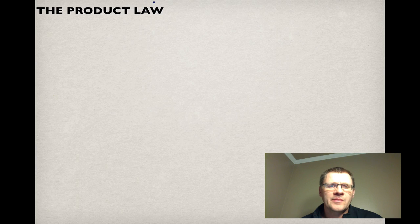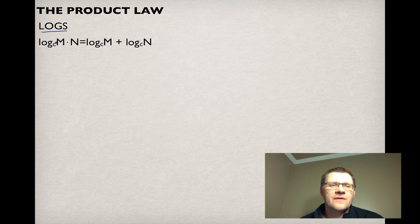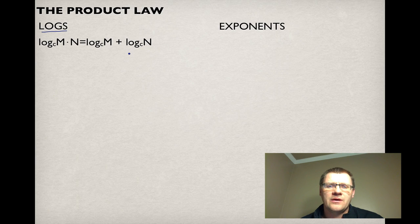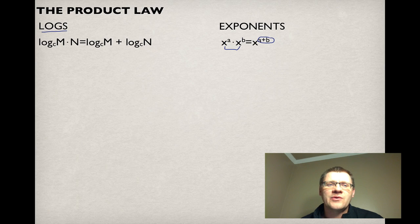Our first law is called the product law. In log terminology, if you have log base c of two numbers m times n, you can change this into an adding question: log_c(m) + log_c(n). Comparing that to our exponent laws: if we have two things at the same base, we add the exponents. Similarly here — we're multiplying two things, so we add the logs.